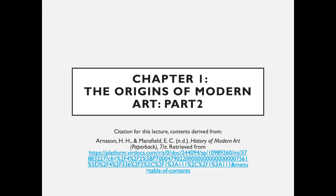Hello and welcome back to chapter one, The Origins of Modern Art, part two. You'll notice again that I have a citation for the contents of the lecture, which is taken from our textbook, The History of Modern Art, chapter one. I do this so you'll know where I got this material and so we'll all get in the habit of citing our sources when writing anything for this class.